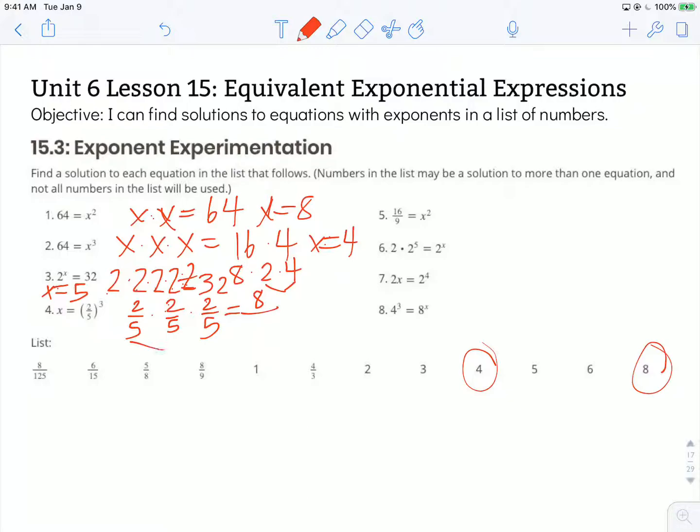And on the bottom I have 5 times 5, which is 25, and 5 groups of 25 I just did a moment ago is 125. So that solution is right here, x is equal to 8 over 125.